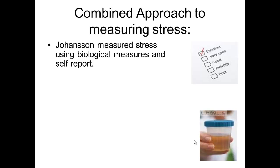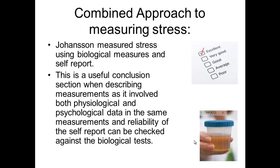The final measure is a combined approach, where you're using a mixture of physiological and psychological measures. The example is Johansson and the Swedish sawmill, where he was looking at a physiological measure — adrenaline levels in urine — and psychological measures where he asked people to rate themselves on scales in terms of various emotional aspects. There are real advantages to the combined approach: you have all the strengths of the individual approaches and get rid of some of the weaknesses. The reliability can be improved because you can check the self-reports against the biological measures — do they correlate with each other and therefore provide support for each other?